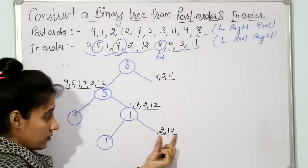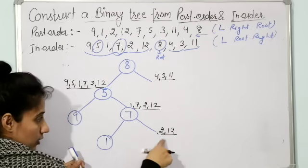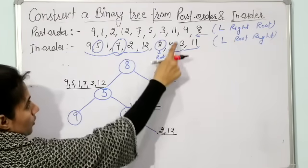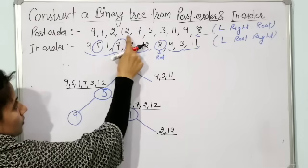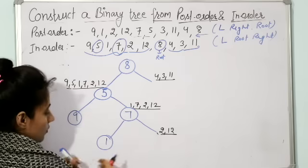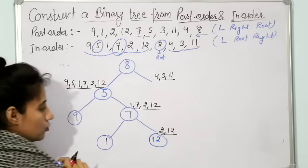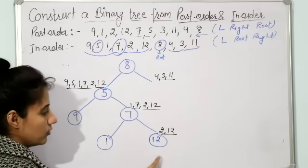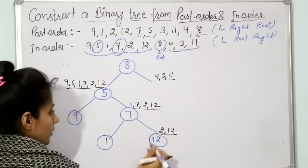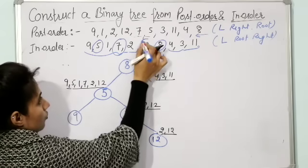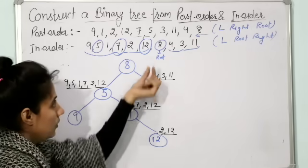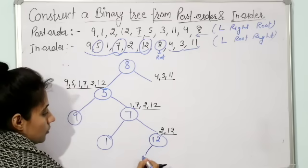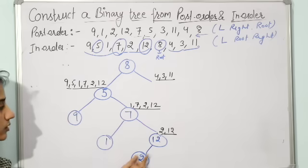Now we have 2 elements: 2 and 12. Find the root out of these by scanning post-order from right to left. 12 is coming first, so 12 would be the root. For the remaining element 2, locate 12 in in-order traversal — 2 is to the left of 12, so 2 would be the left child of 12. We are now done with the left subtree.